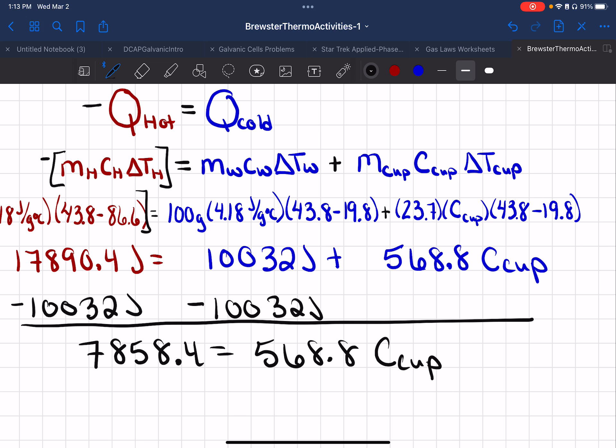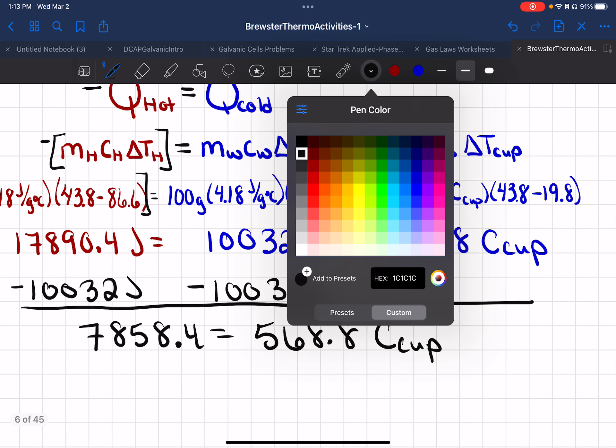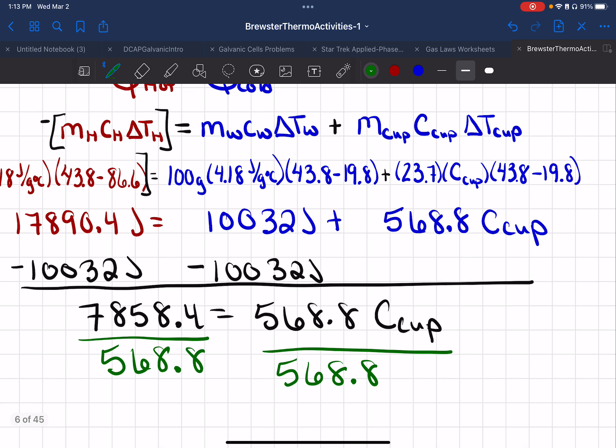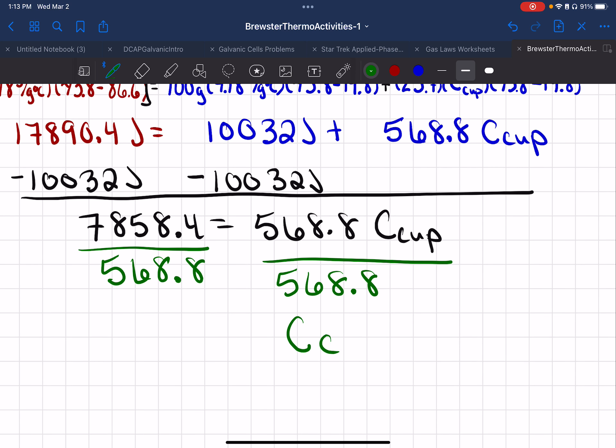Now, C cup is what I'm looking for. That's my X. And so at this point, I'm going to divide out by that 568.8. And we're going to get a value for our cup.